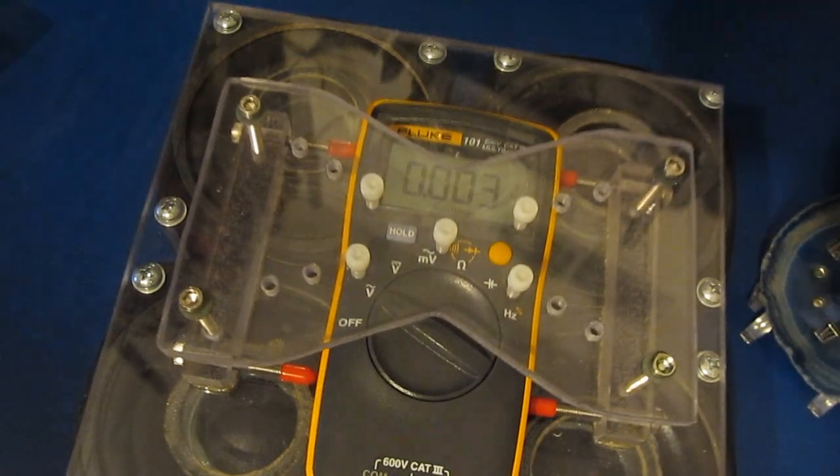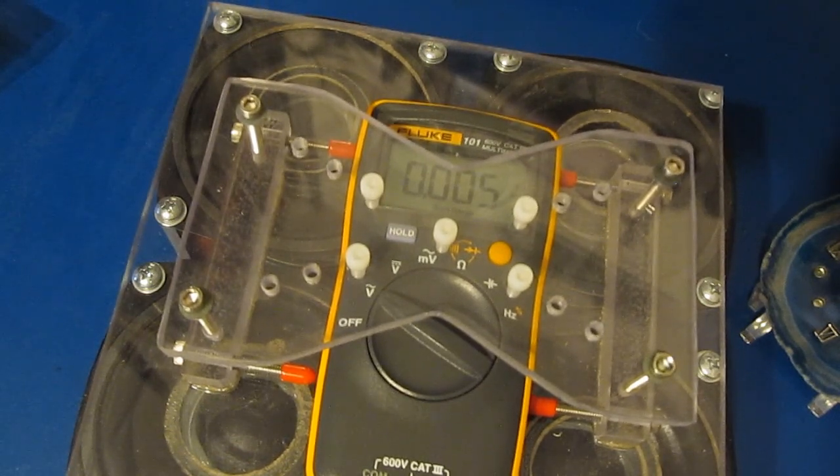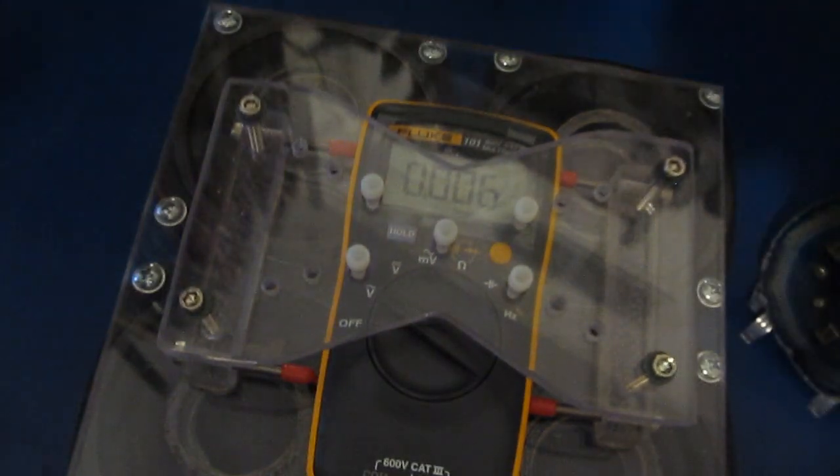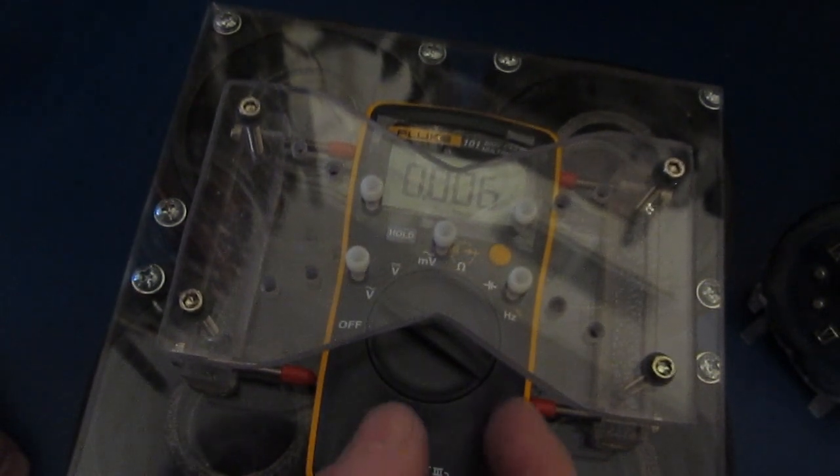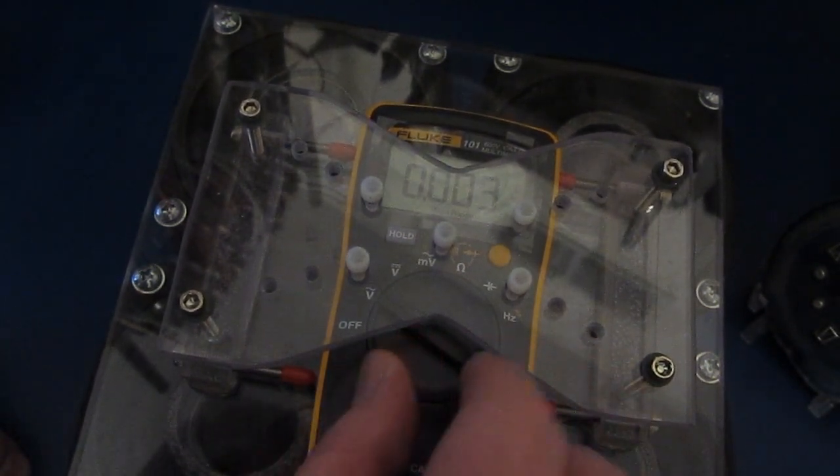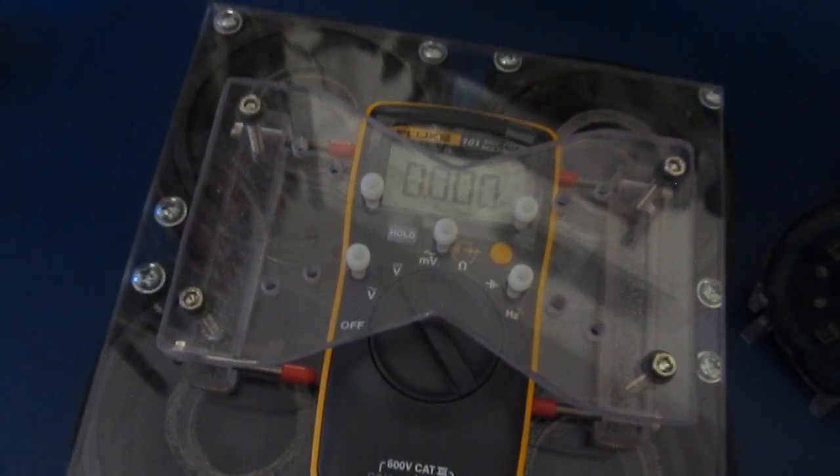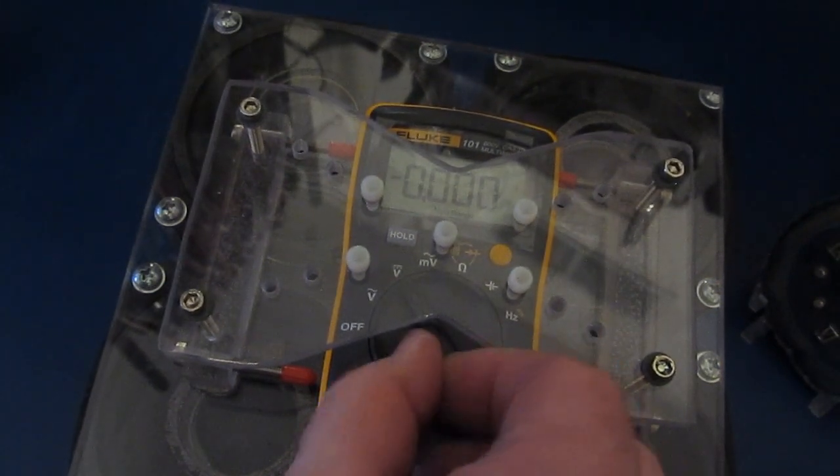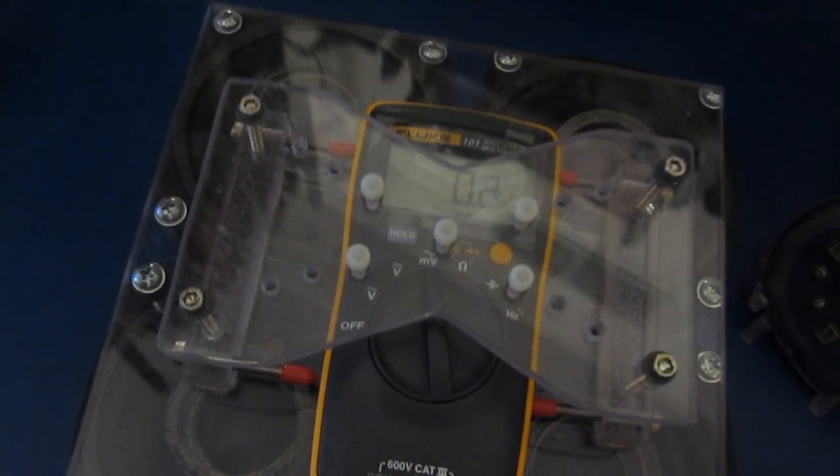That's shaking pretty good right there. Looks like we get about maybe six counts. Let's try it in the DC volt mode. Not seeing anything. And try it in the millivolt scale. Looks like two counts.